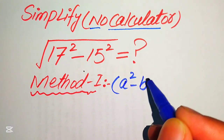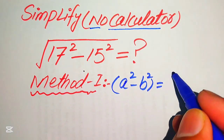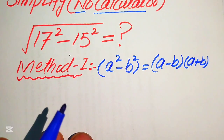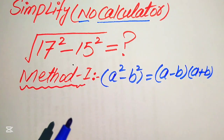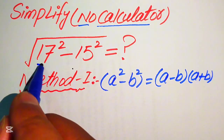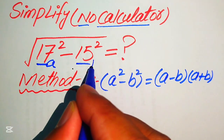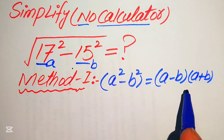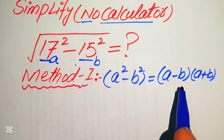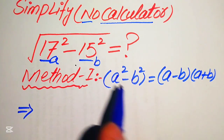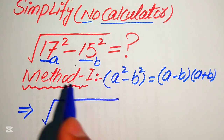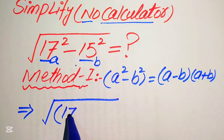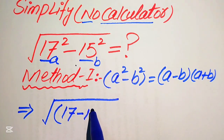You know that a squared minus b squared equals (a minus b) times (a plus b). We use this formula to simplify the terms. Here our a equals 17 and our b equals 15. We substitute these two values into the right-hand side of this formula, so we expand the given expression as (a minus b), which is (17 minus 15).